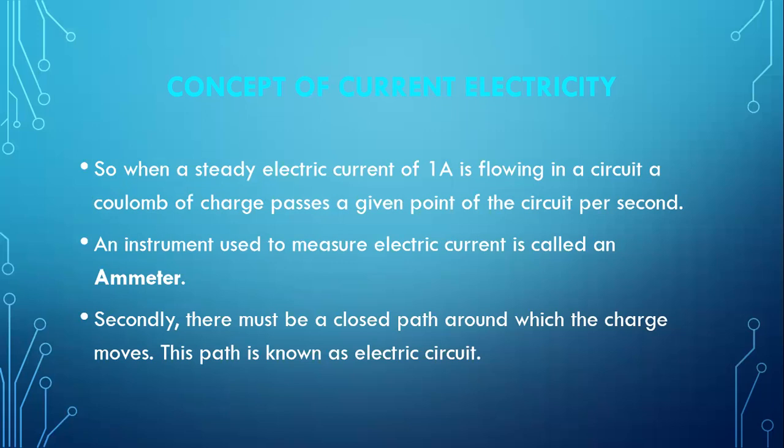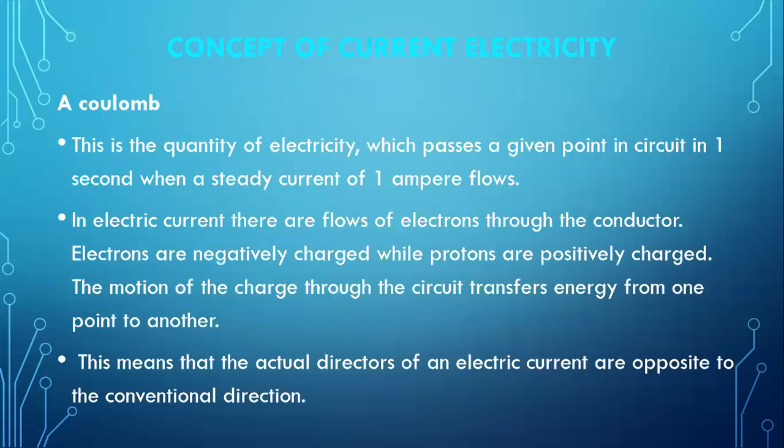There is an instrument used to measure electric current called an ammeter. An ammeter detects the amount of amperes flowing in a circuit. There must be a closed path around which the charge moves. This closed path is what is known as the electric circuit.